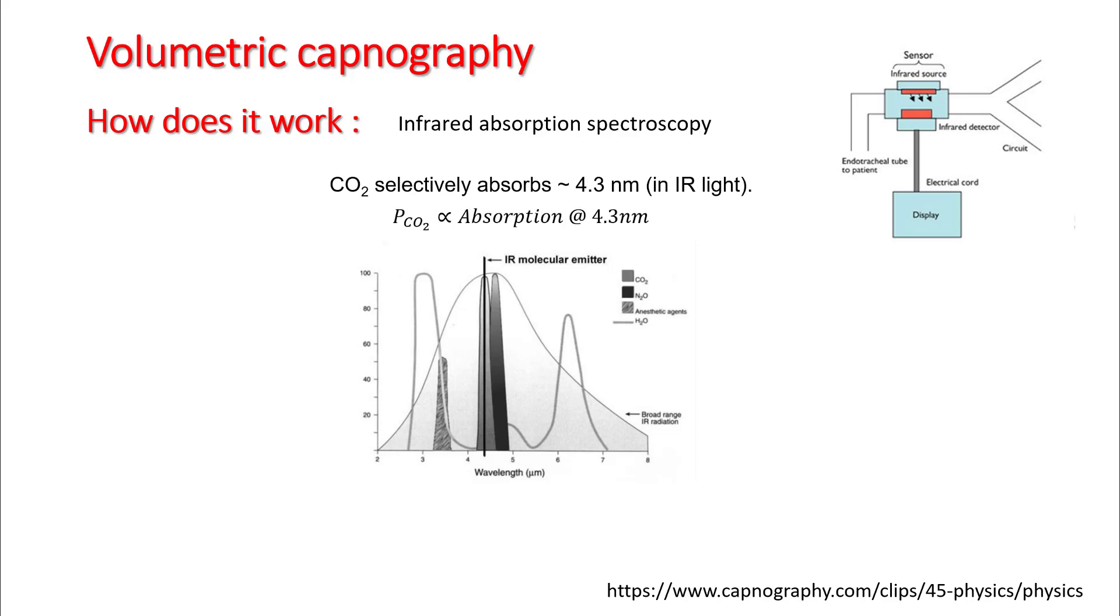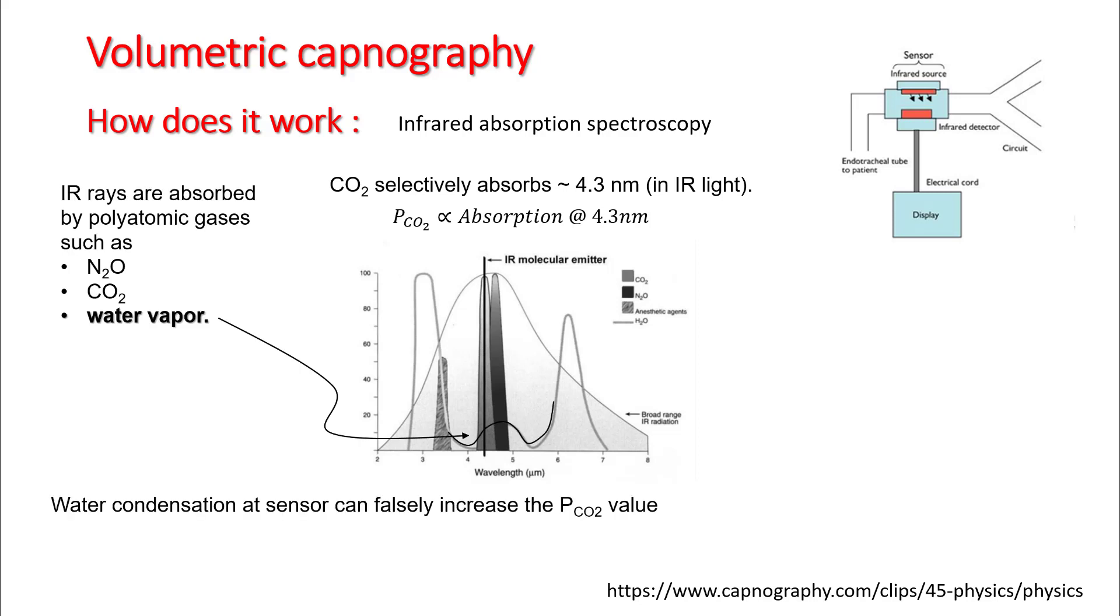There are a few other molecules that can absorb at 4.3 nanometers, and water vapor is the most important one. So condensation at the sensor can falsely increase the PCO2 value.